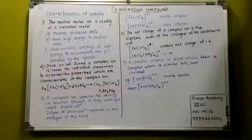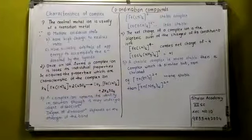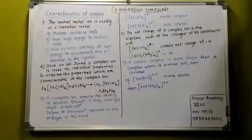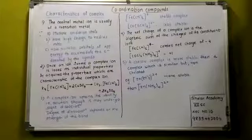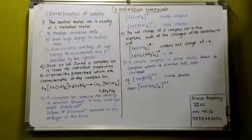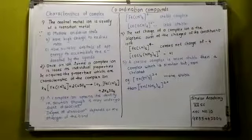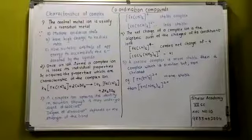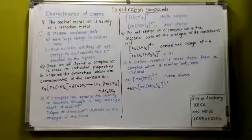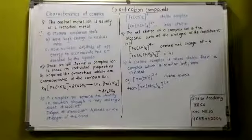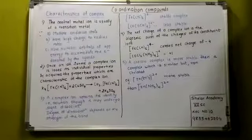Now the next point: Once an ion forms a complex ion, it loses its individual properties and then it acquires the properties of the complex ion. That means when the ferrous ion, Fe2+ ion, when it forms a complex like K4[Fe(CN)6], it will lose its individual properties. It will not give any test for Fe2+ ions.